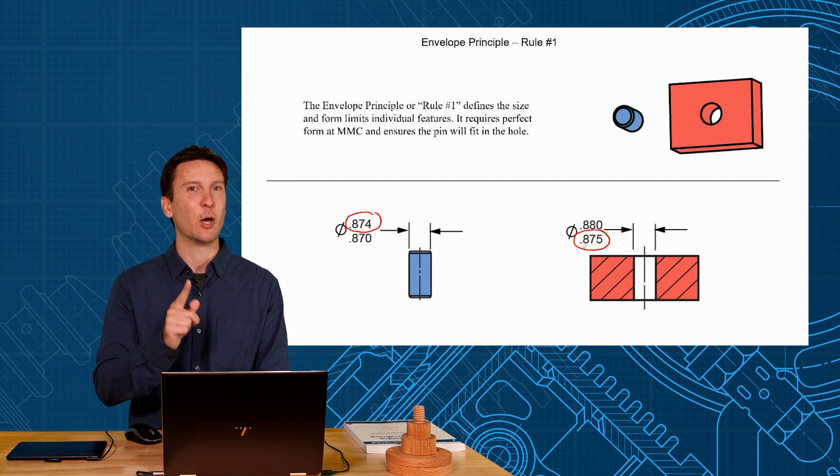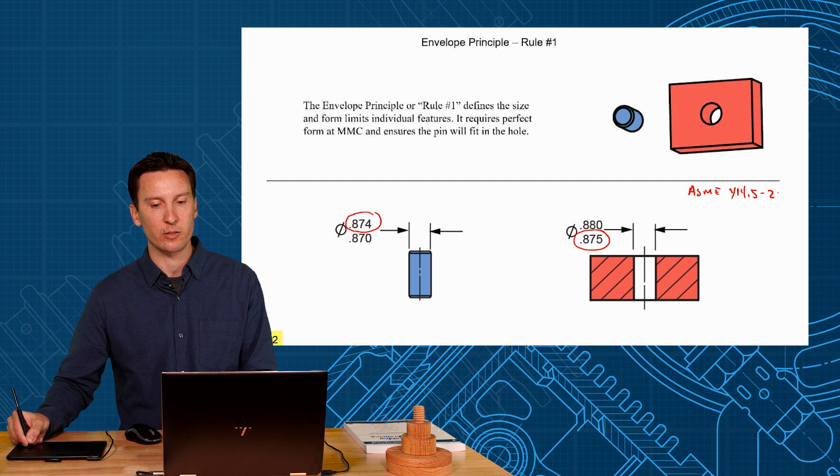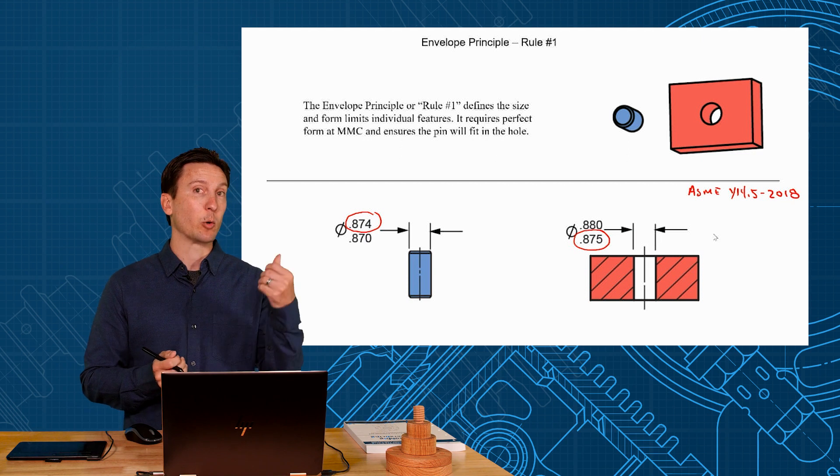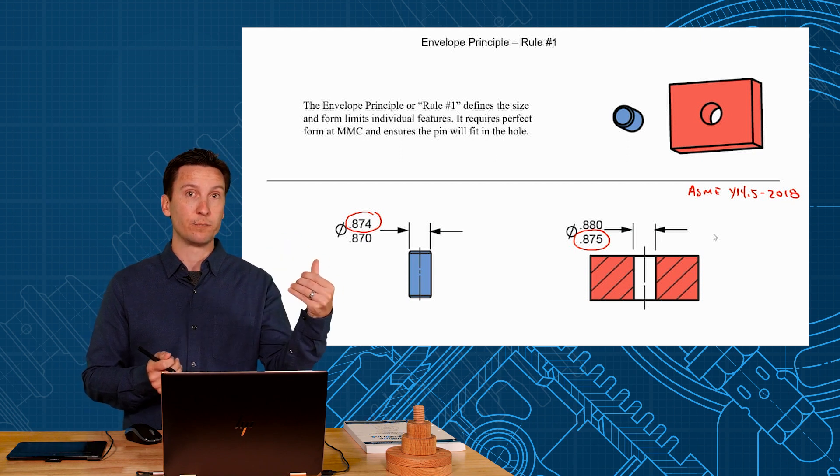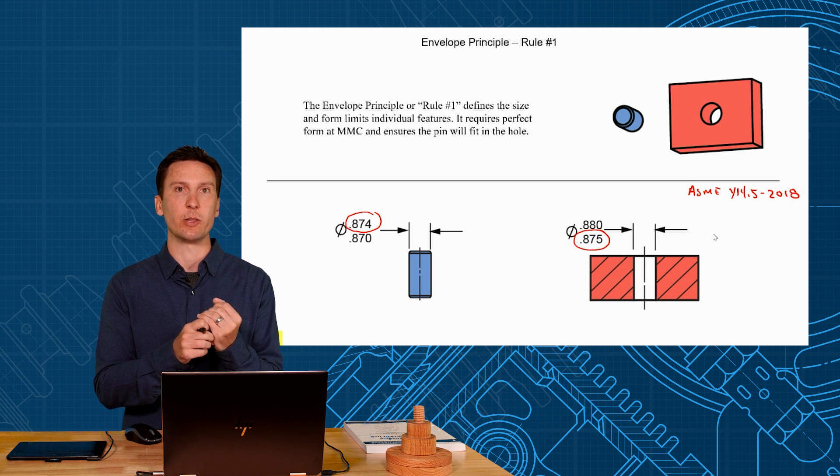It depends what standard you're working to. So if your drawing says interpret per ASME Y14-5 and then you give the year, it doesn't really matter which year, 2018 will say yes they're guaranteed to fit together because we require perfect form at MMC. So you're guaranteed a one thou clearance between them.